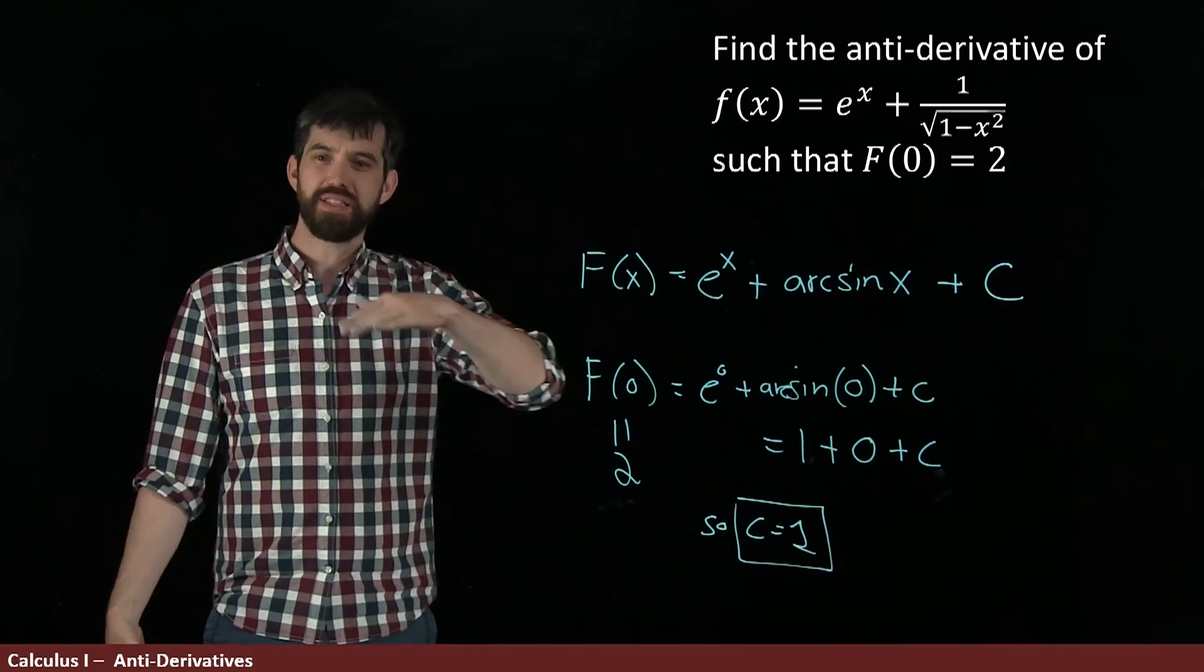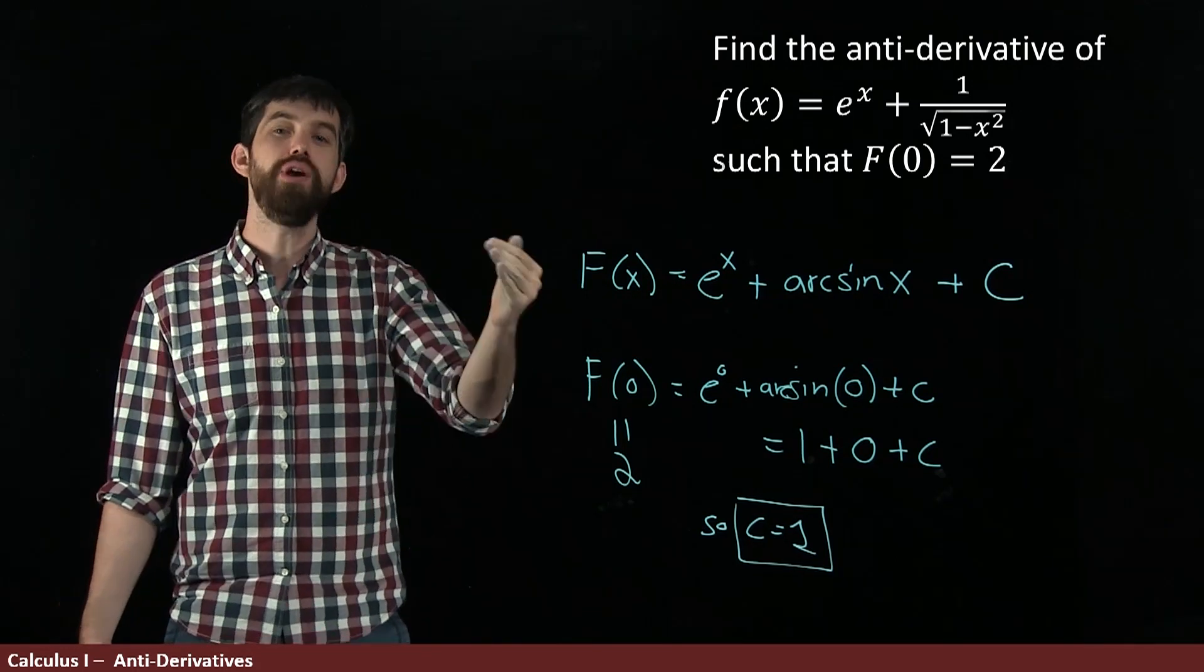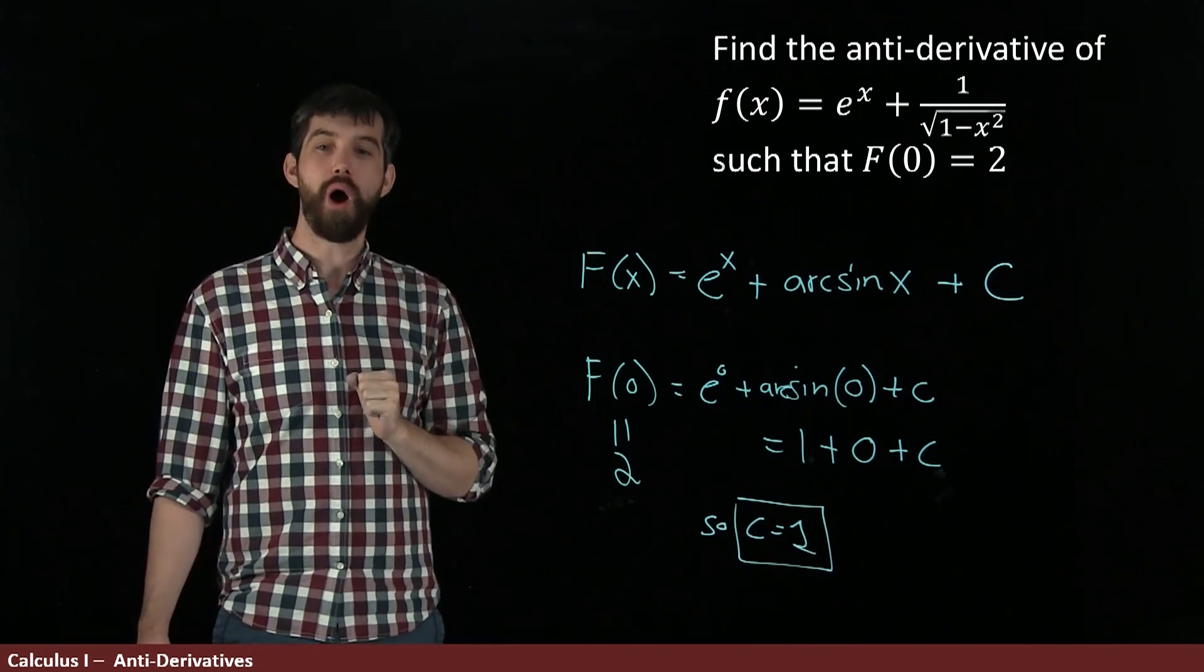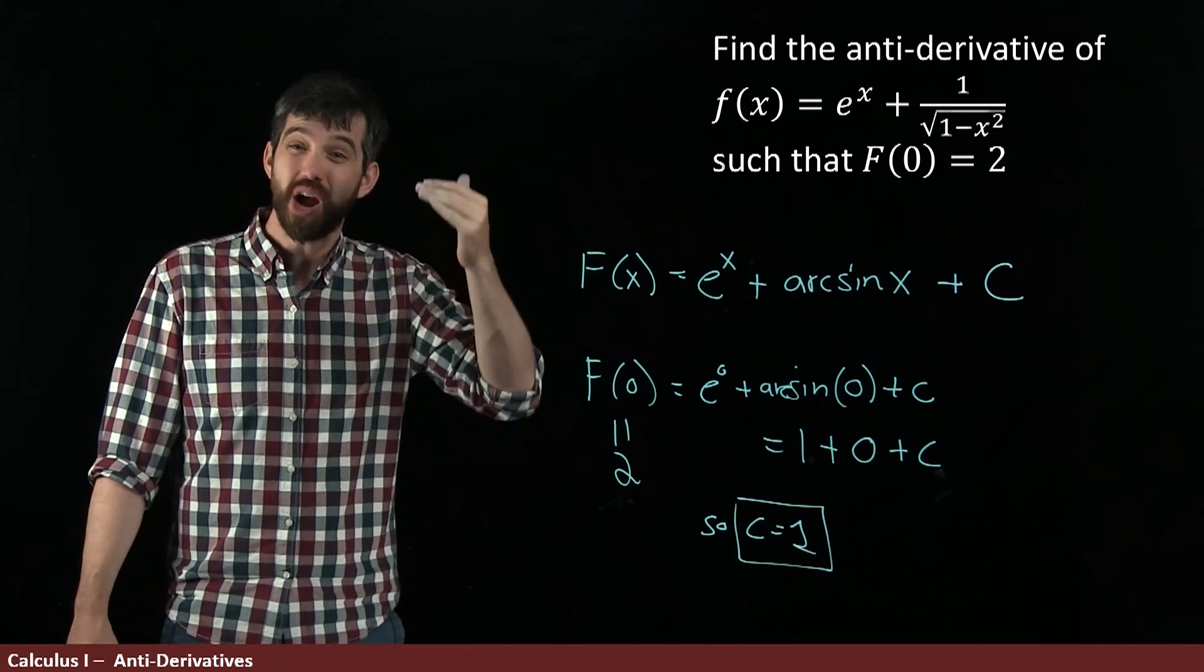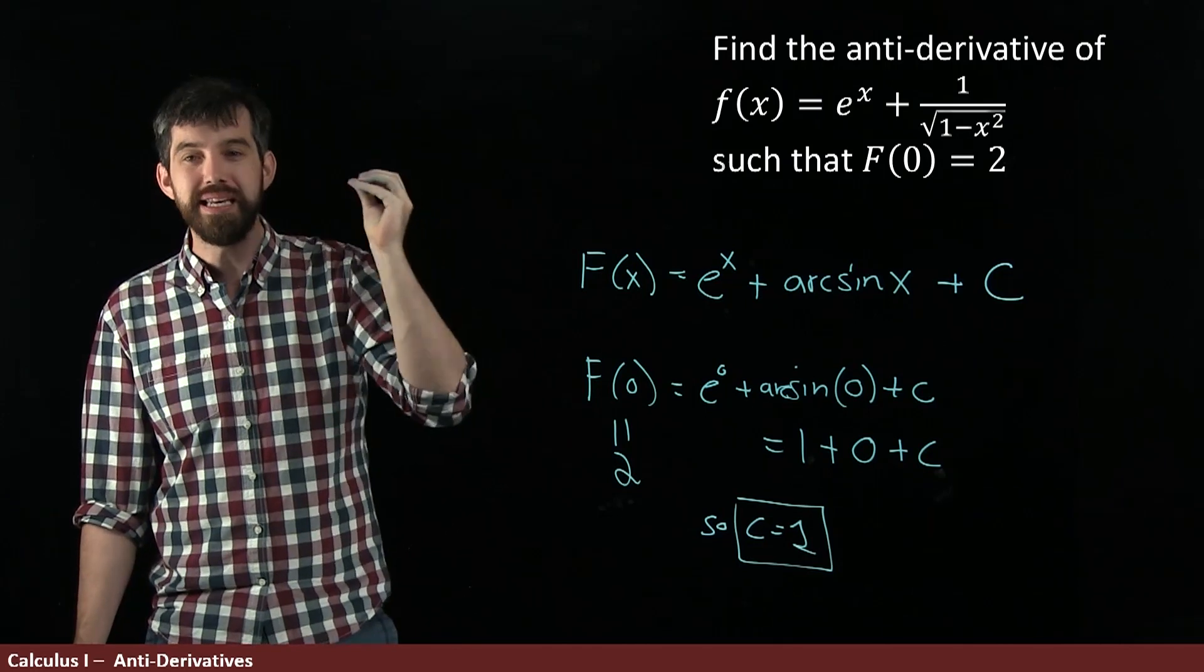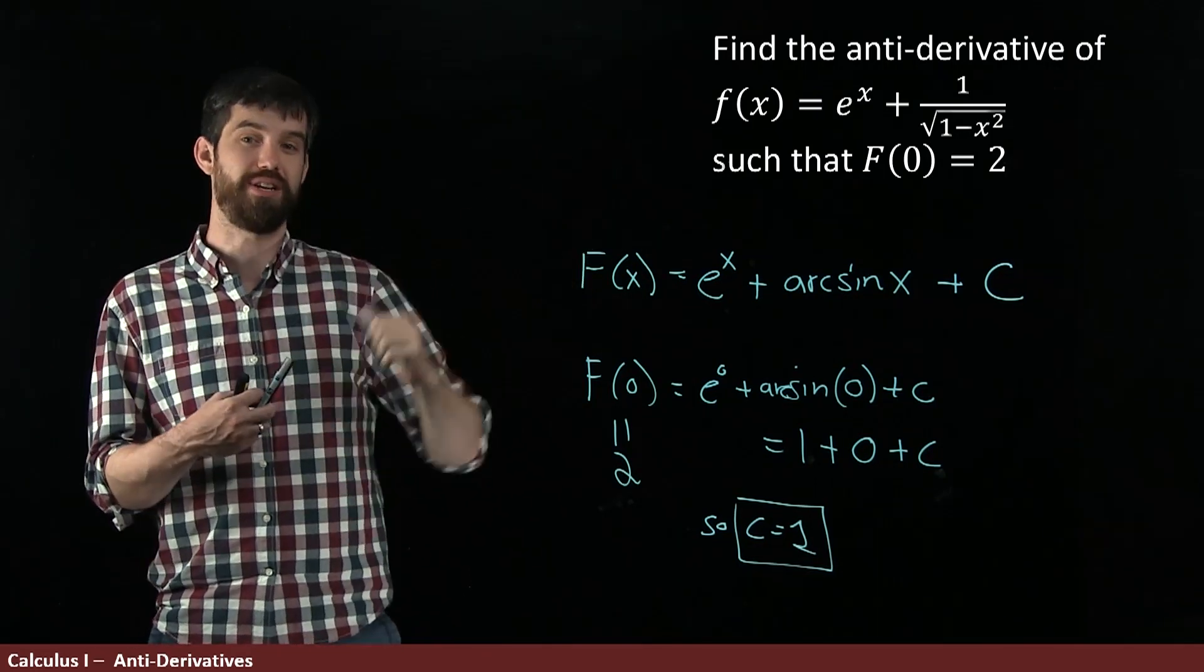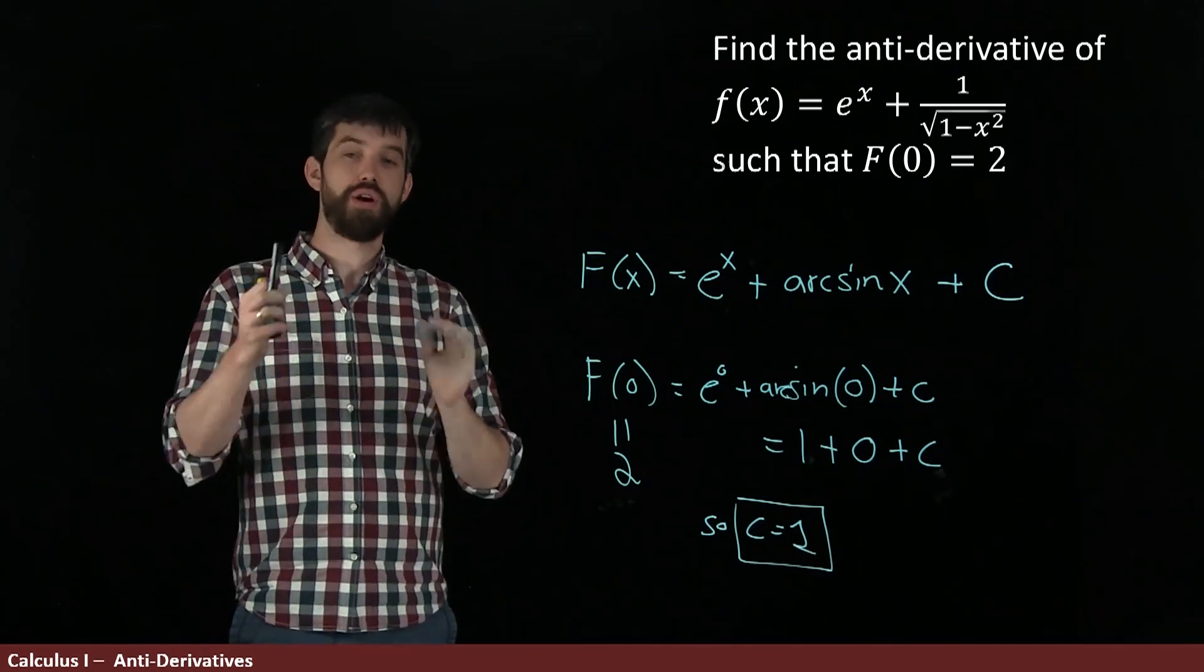And so you might have this lovely distance function, but there's going to be a plus C in there. You do not know where to start. So I can't tell you how far you are away from me just by knowing what your velocity has been all along, because I also have to know where you started. How far did you initially start from me in order for me to figure out how far you eventually ended up. So this asymmetry is going to be incredibly important in a large number of our applications.